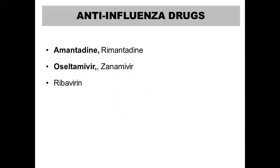At the undergraduate level, among the anti-herpes drugs discussed, the most important one is acyclovir, which is often asked in short notes. The other drugs have been covered for the purpose of completing the anti-herpes drug topic. Now we'll shift to the anti-influenza drugs. Under this we have amantadine, rimantadine, oseltamivir, zanamivir, and ribavirin. We'll be mainly concentrating on amantadine and oseltamivir.